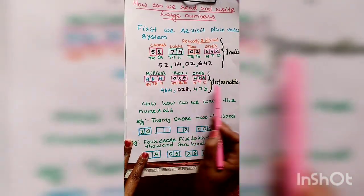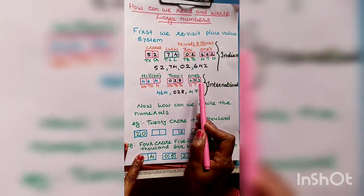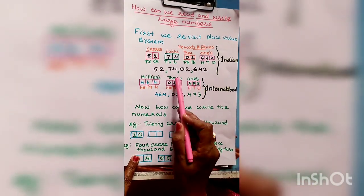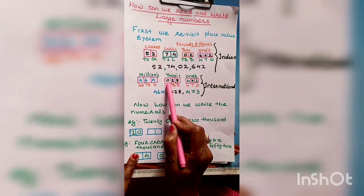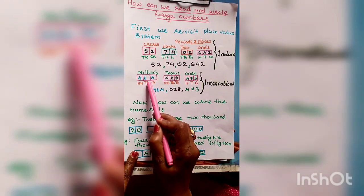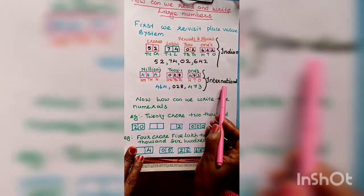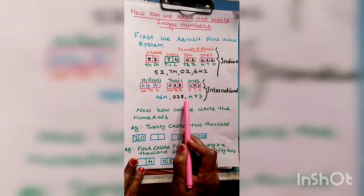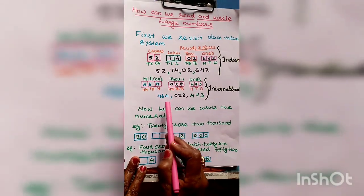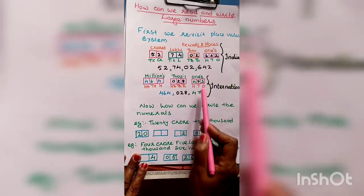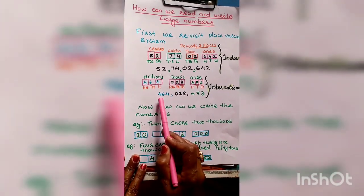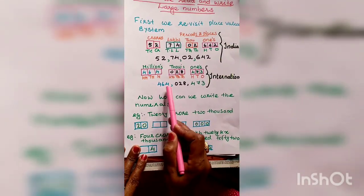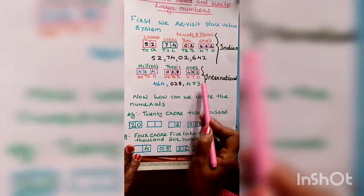Now we will see the international place value system. In the international place value system, each period has three places. The ones period has ones, tens, hundreds. The thousands period has thousand, ten thousand, and hundred thousand. The millions period has million, ten million, and hundred million. For example, reading a number divided by commas: 464 million, 28 thousand, 473.